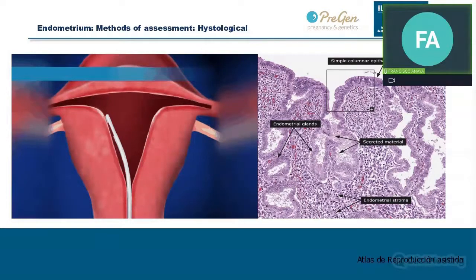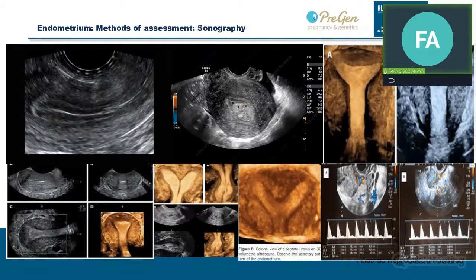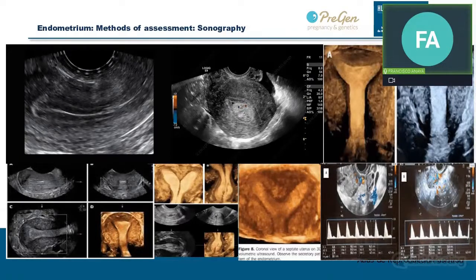Moving to less invasive methods of assessment, the most important is transvaginal sonography, which has become widely accepted as a tool for high-resolution imaging of the uterus and endometrium. Endometrial growth can be easily measured using ultrasound — its thickness and texture can be indicators of normal development or signs of disease. In the early proliferative phase following menses it is typically thin, then in response to estrogen it thickens, growing between 0.1 and 0.5 millimeters daily. Following ovulation it becomes hyperechoic as secretory changes ensue.